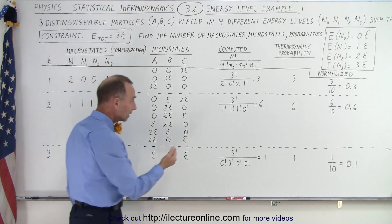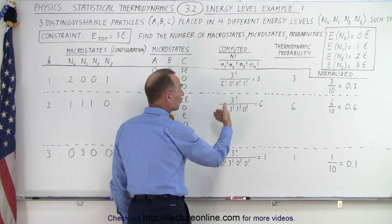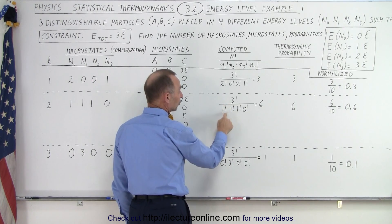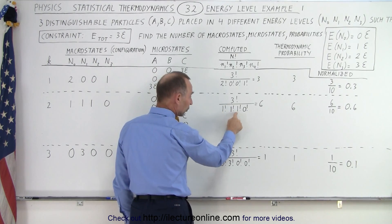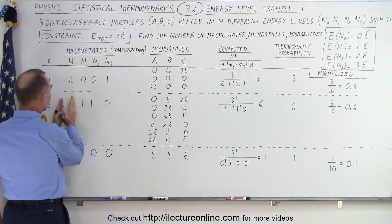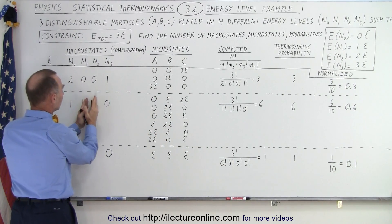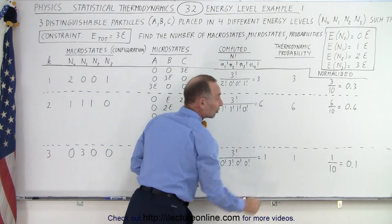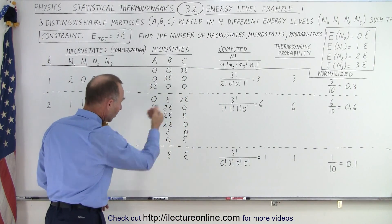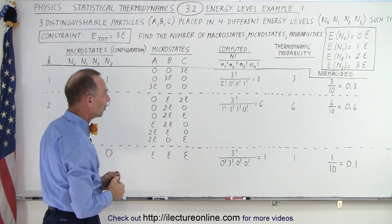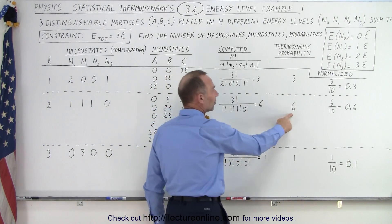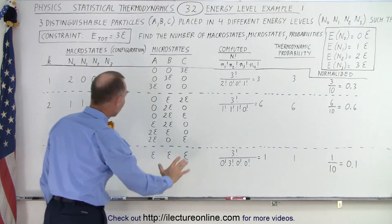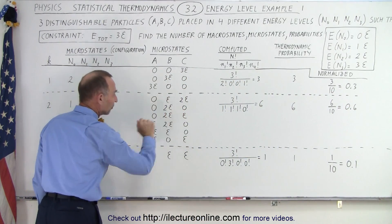If we calculate numerically the number of microstates, we have three factorial divided by one factorial, one factorial, one factorial, and zero factorial — that is, one in the zero state, one in the one state, one in the two state, and zero in the three state. That gives us six microstates, and you can indeed see six microstates. The thermodynamic probability is six, or normalized at six out of ten, meaning 60% of the time we'll have the electrons in this configuration.